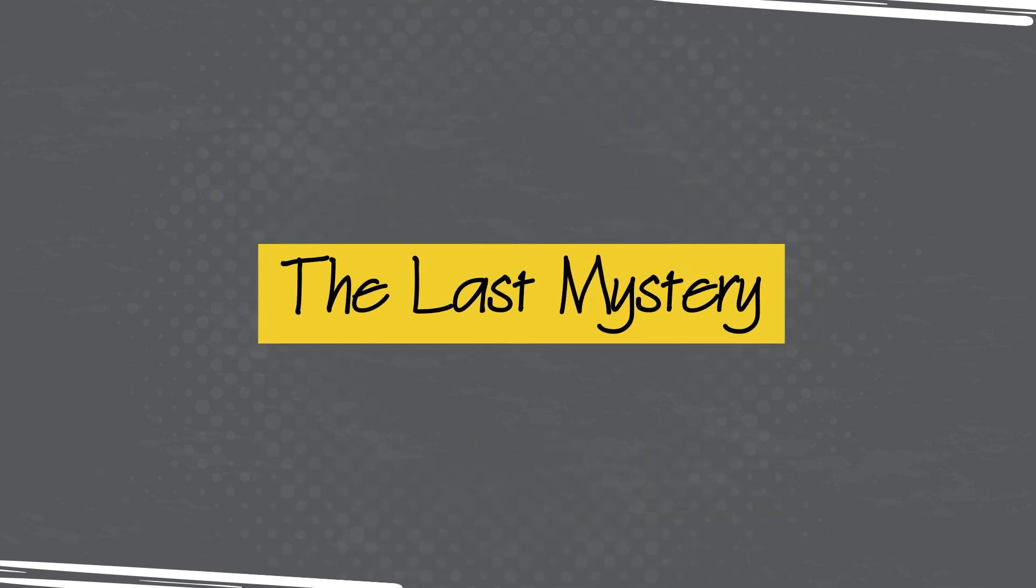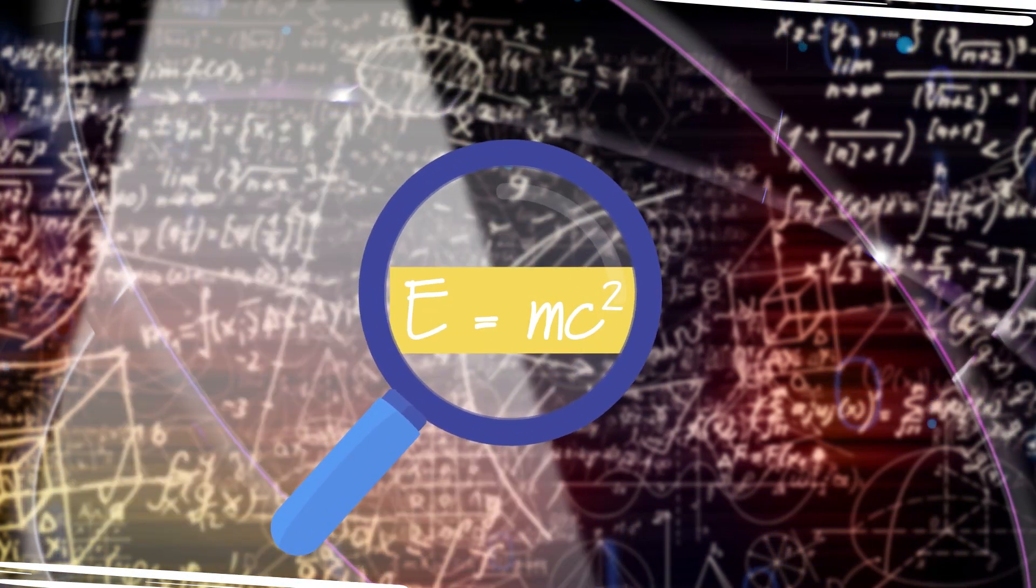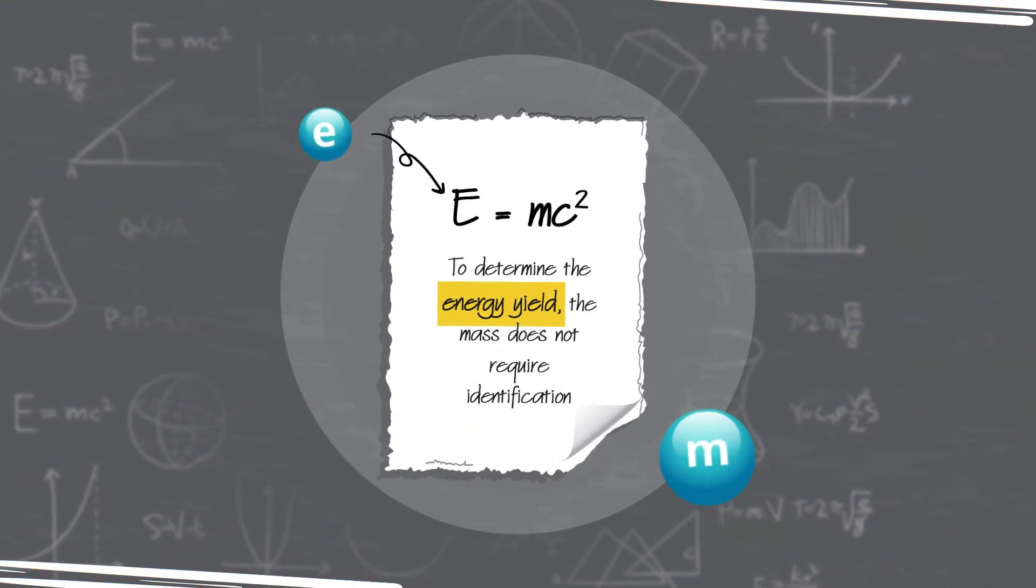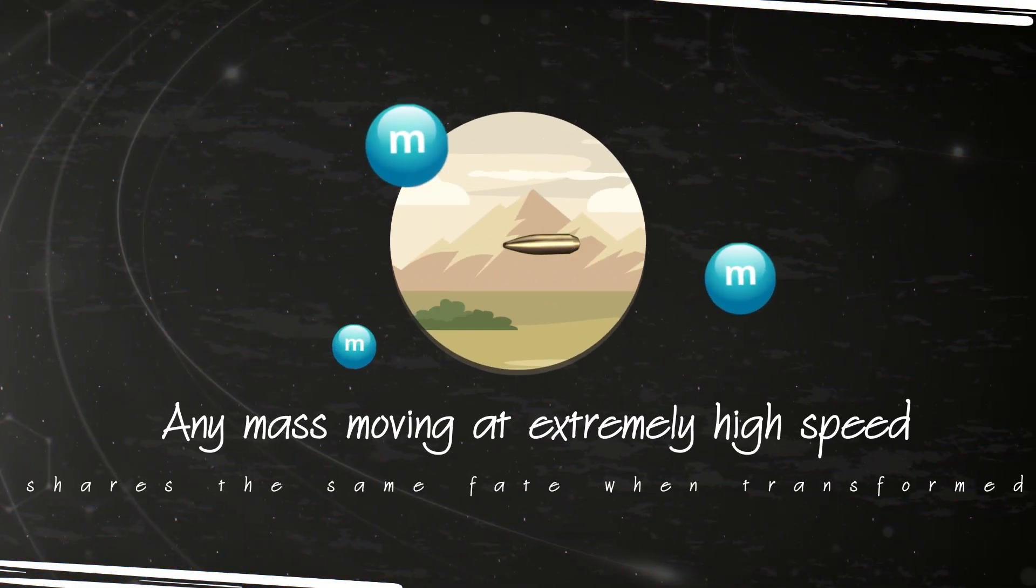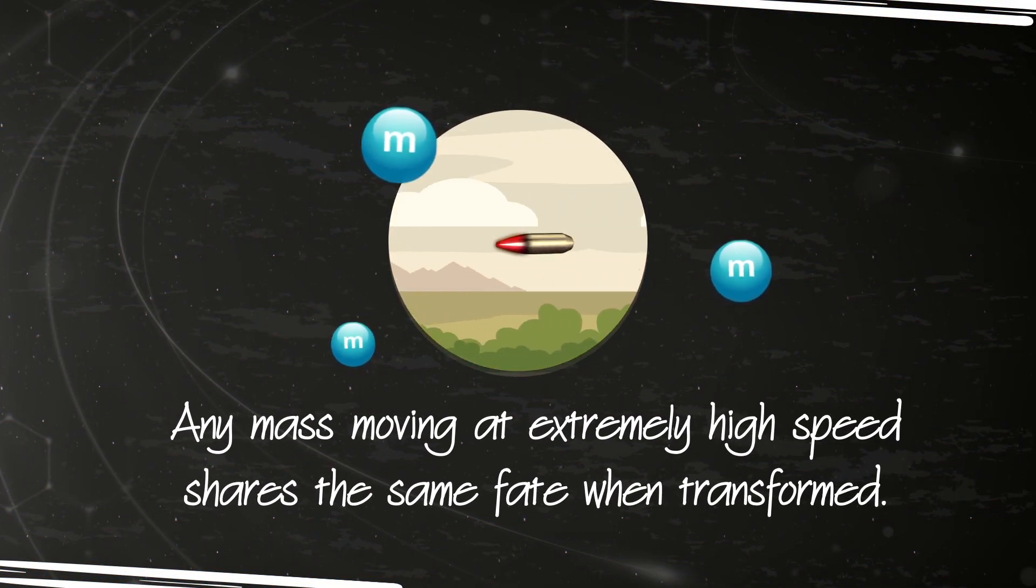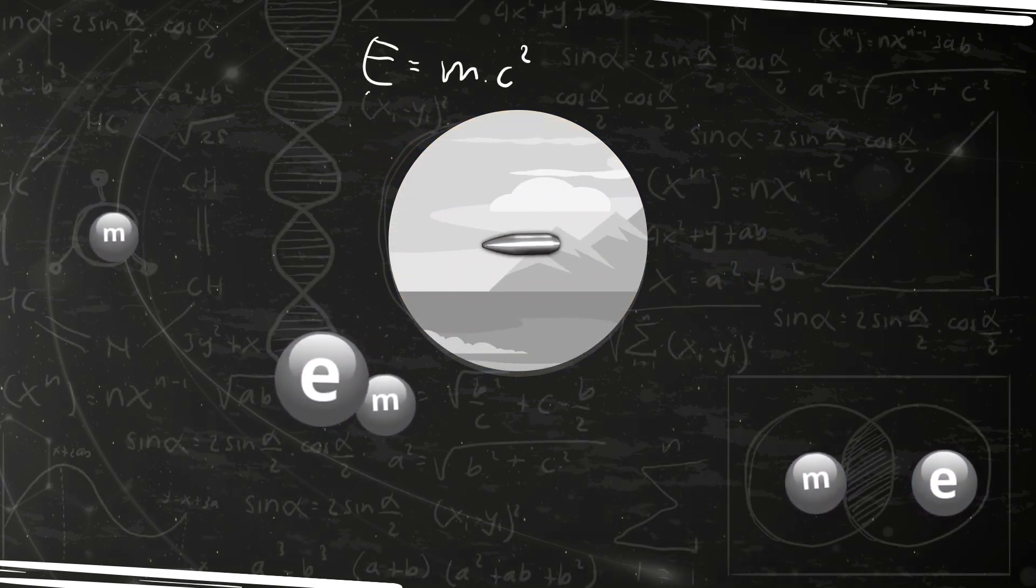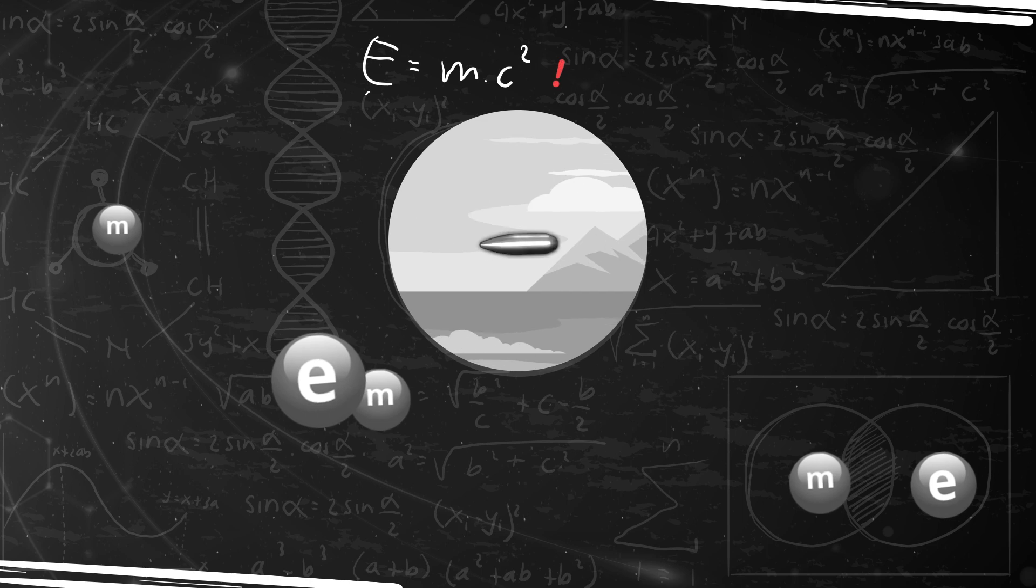The last mystery. Einstein's famous formula becomes increasingly complicated when applied to calculating the quantity of energy converted from a mass. To determine the energy yield, the mass does not require identification. Any mass moving at extremely high speed shares the same fate when transformed. However, mathematically and physically, every kind of matter dictates the quantity of energy it produces during the process.